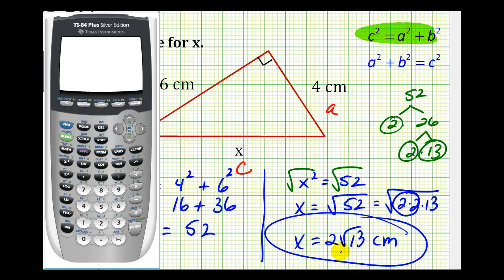And if we wanted a decimal approximation, we could just type in the square root of 52. And to verify that we simplified correctly, we could type in two square root of 13. And you can see the result is the same. X is approximately 7.2 centimeters.